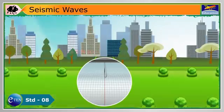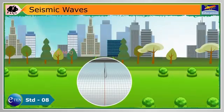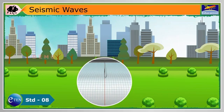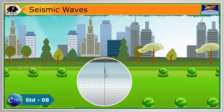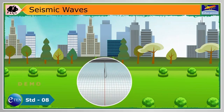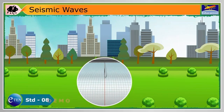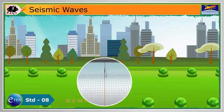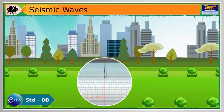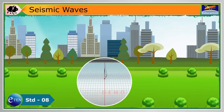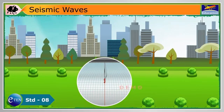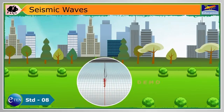Scientists use seismic waves to measure how big an earthquake is. They use a device called a seismograph to measure the size of the waves. The size of the waves is called the magnitude.